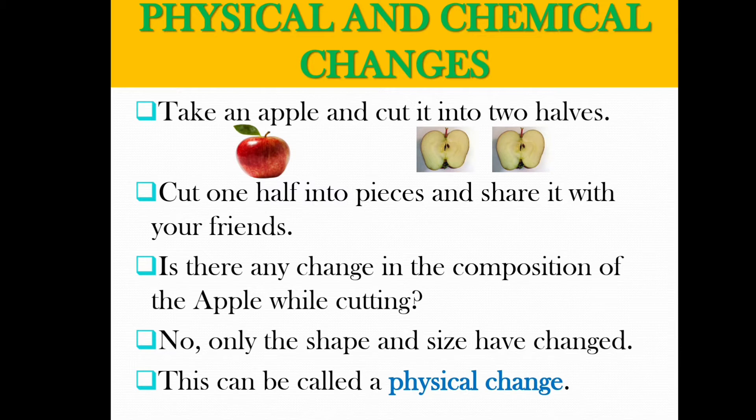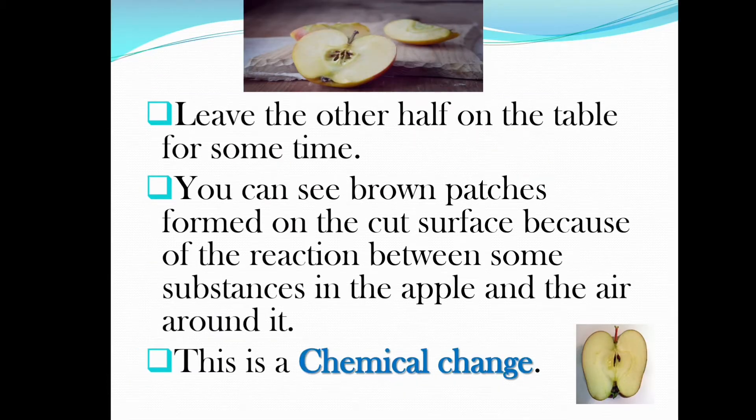Let us discuss physical and chemical changes. Take an apple and cut it into two halves. Cut one half into pieces and share it with your friends. Is there any change in the composition of the apple while cutting? No — only the shape and size have changed. This can be called a physical change.